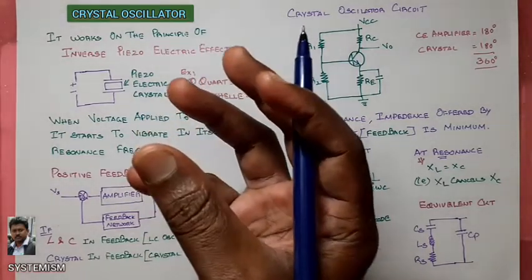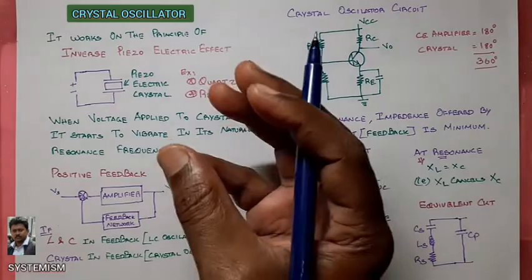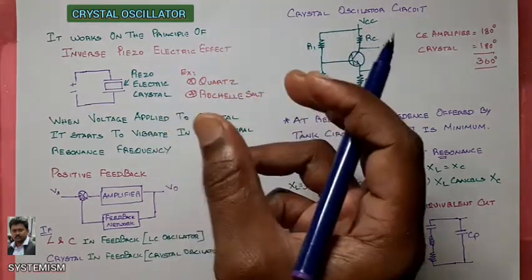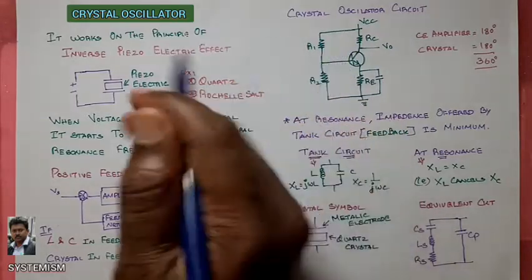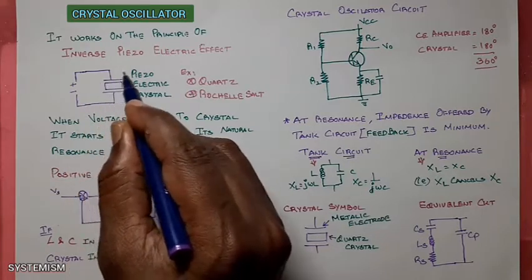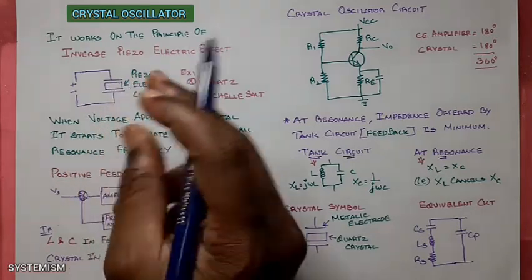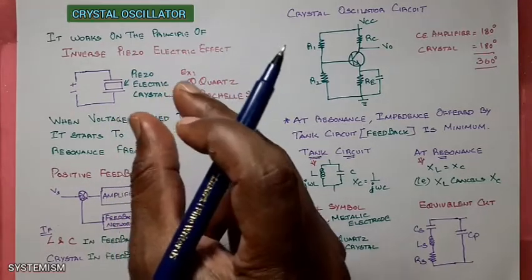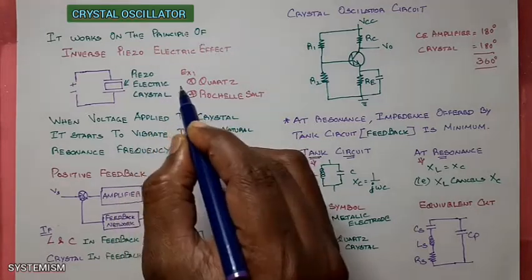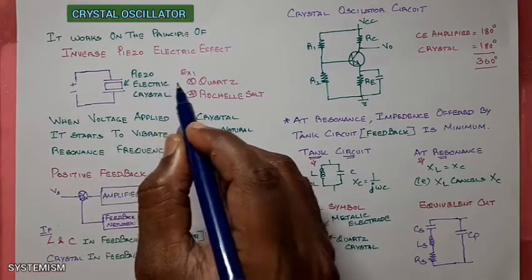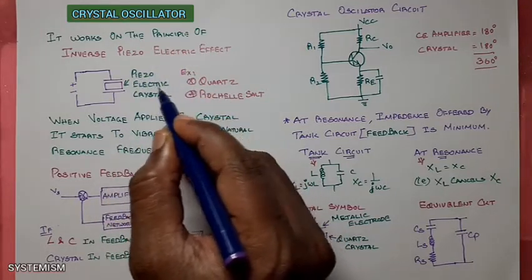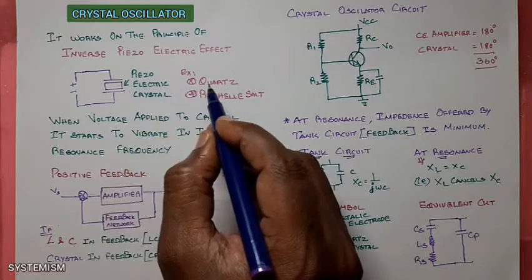We know some crystals called piezoelectric crystals. They have a natural quality of vibrating at their own resonance frequency. What is inverse piezoelectric effect? When you apply a voltage to these types of piezoelectric crystals, the crystal starts to vibrate at its resonance frequency. This crystal has a particular natural resonance frequency. These types of crystals are called piezoelectric crystals.